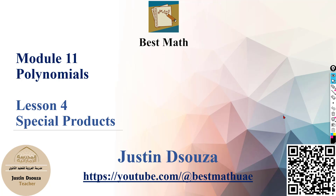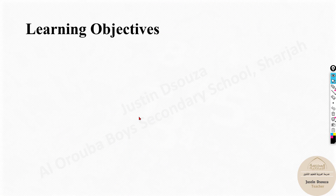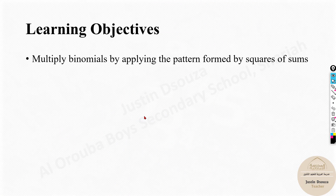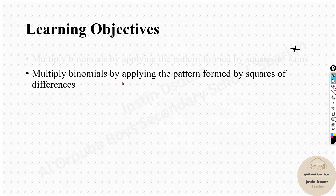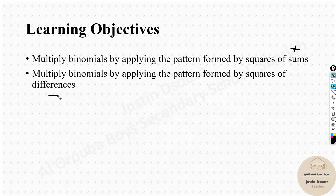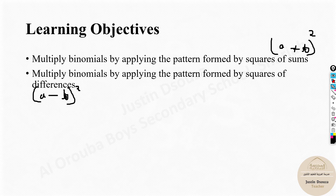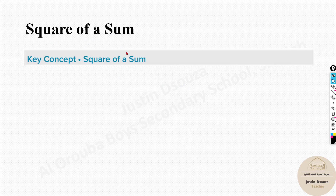Hello everyone, we will move on to Lesson 4: Special Products. The learning objectives of this lesson are to multiply binomials by applying the pattern formed by the square of sums — which relates to positive plus — and multiply binomials by applying the pattern formed by the square of differences. Square of sums means (a+b) whole squared, and square of differences means (a-b) whole squared. These are the identities we will learn about.